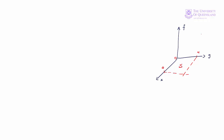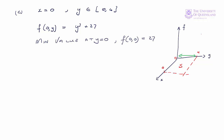Next we look at the case where x equals 0 — that's along the left edge of our square, where y varies from 0 to 4. The function f(0, y) equals y³ plus 27, again an increasing function. The minimum value is 27 when y equals 0, and the maximum along that side is 91 when y equals 4.